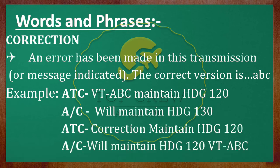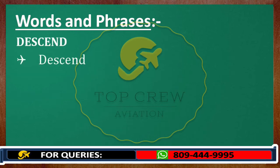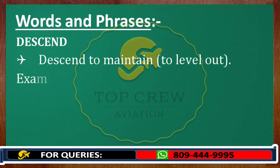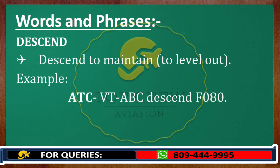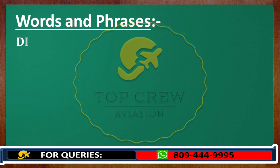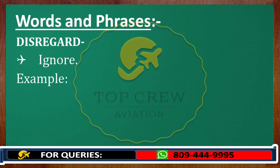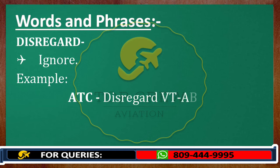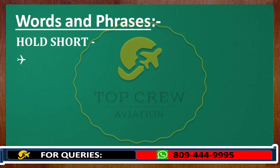Next is Descent, which means descend to maintain, to level out — same as Climb. For example, Victor Tango Alpha Bravo Charlie, descent flight level 080. Next is Disregard, which means ignore. Consider the transmission as not sent. Let's say after giving any instruction, if ATC does not want you to follow that, he would say Disregard, Victor Tango Alpha Bravo Charlie.